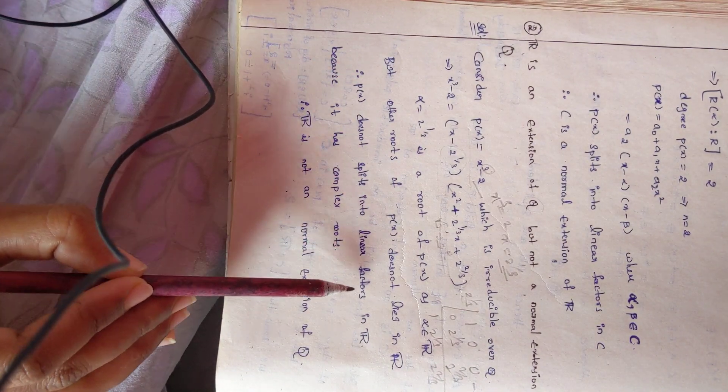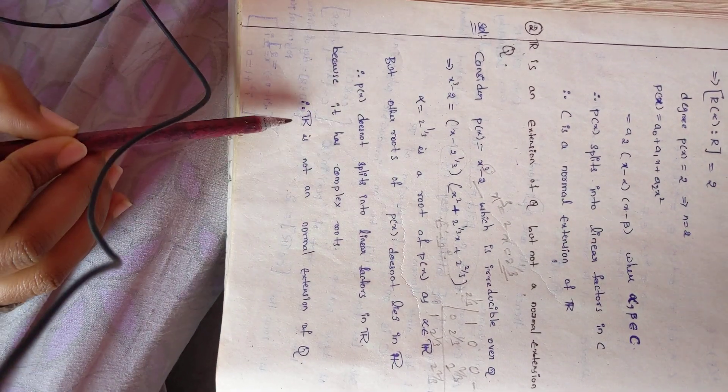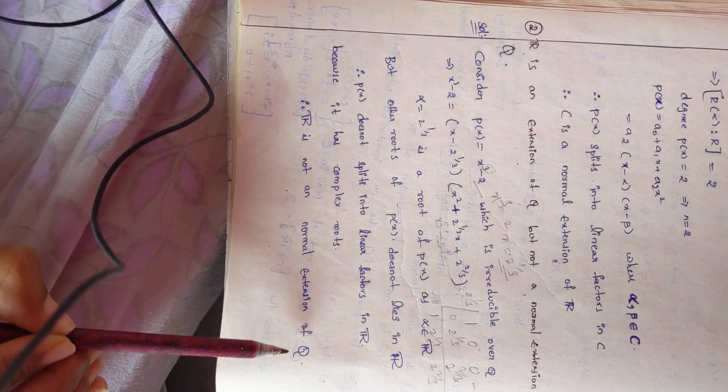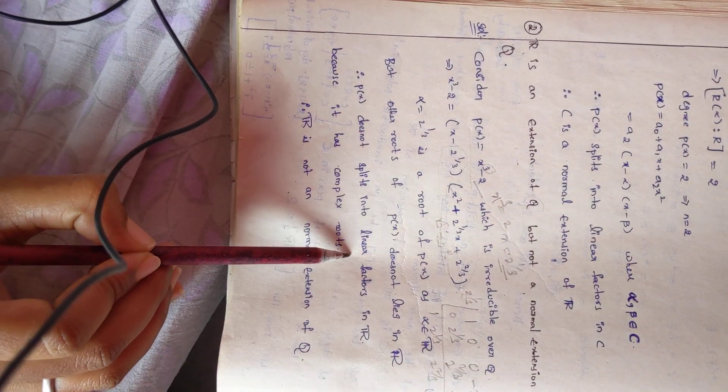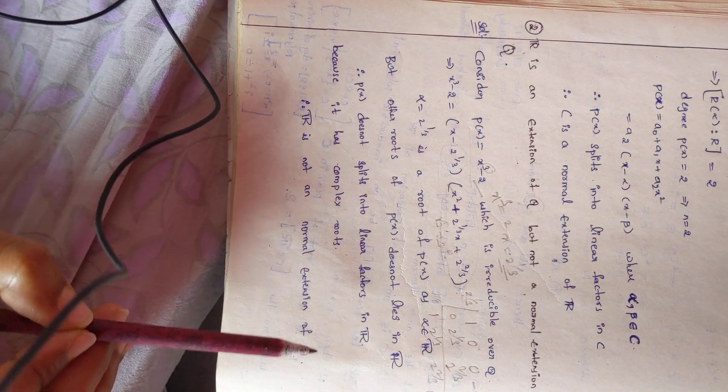P does not split into linear factors in R because it has complex roots. Therefore R is not a normal extension of Q. Hence, complex roots exist which means this is not a normal extension of Q.